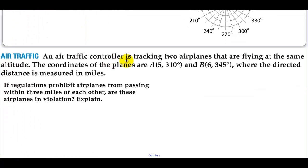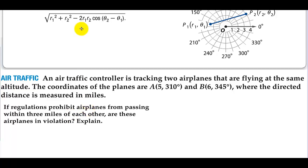An air traffic controller is tracking two airplanes that are flying at the same altitude. The coordinates of the planes are (5,310°) and (6,345°), where the directed distance is measured in miles. If regulations prohibit airplanes from passing within 3 miles of each other, are these airplanes in violation? Explain.